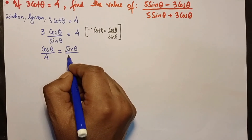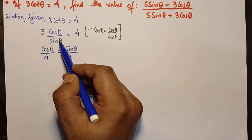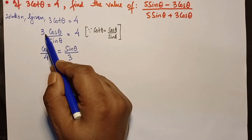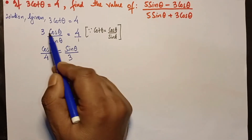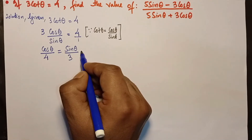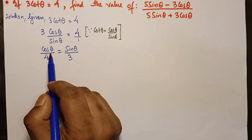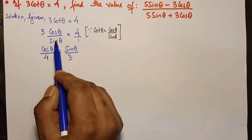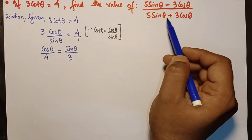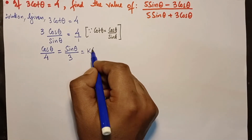So replacing the positions: sinθ goes up, 4 comes down, and 3 comes down — there is always 1, so 3 ones are 3. Now, the reason I use this method is that cotθ involves cosθ and sinθ, and the equation we need to evaluate also has sinθ and cosθ. So I can directly introduce a parameter k.